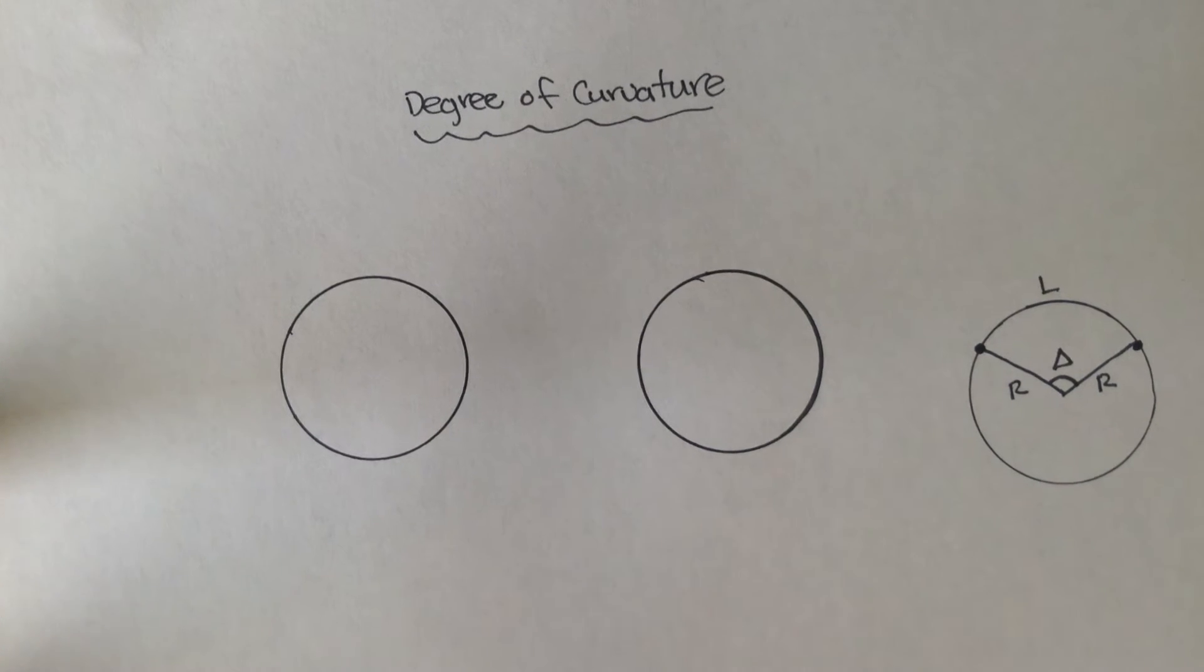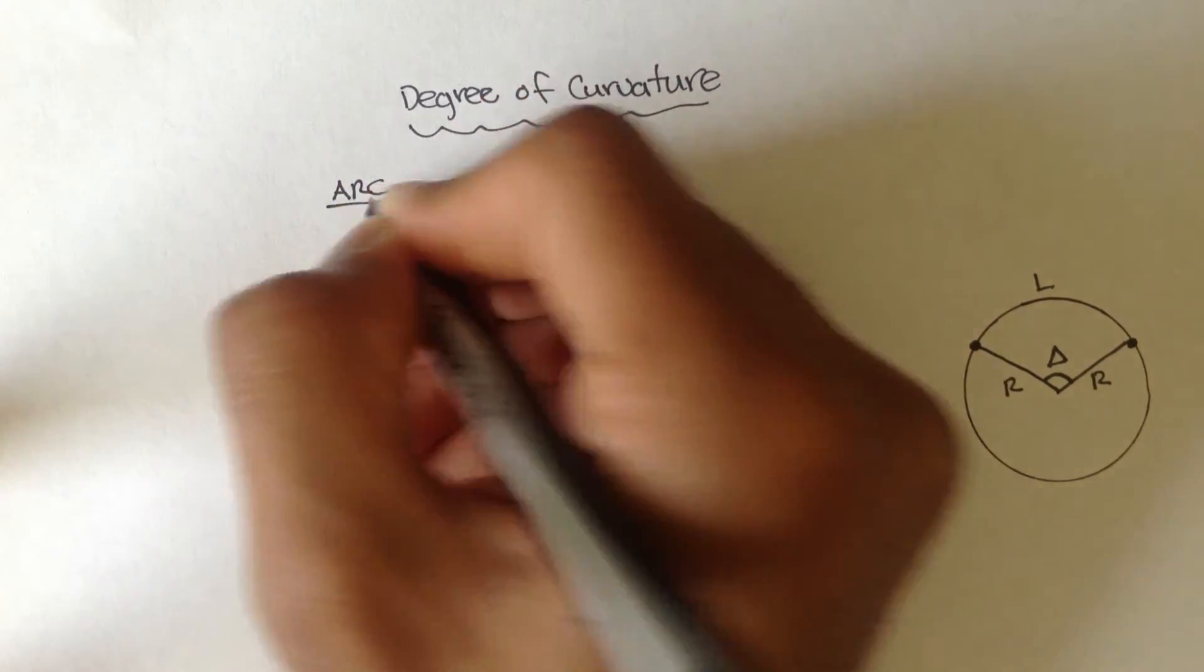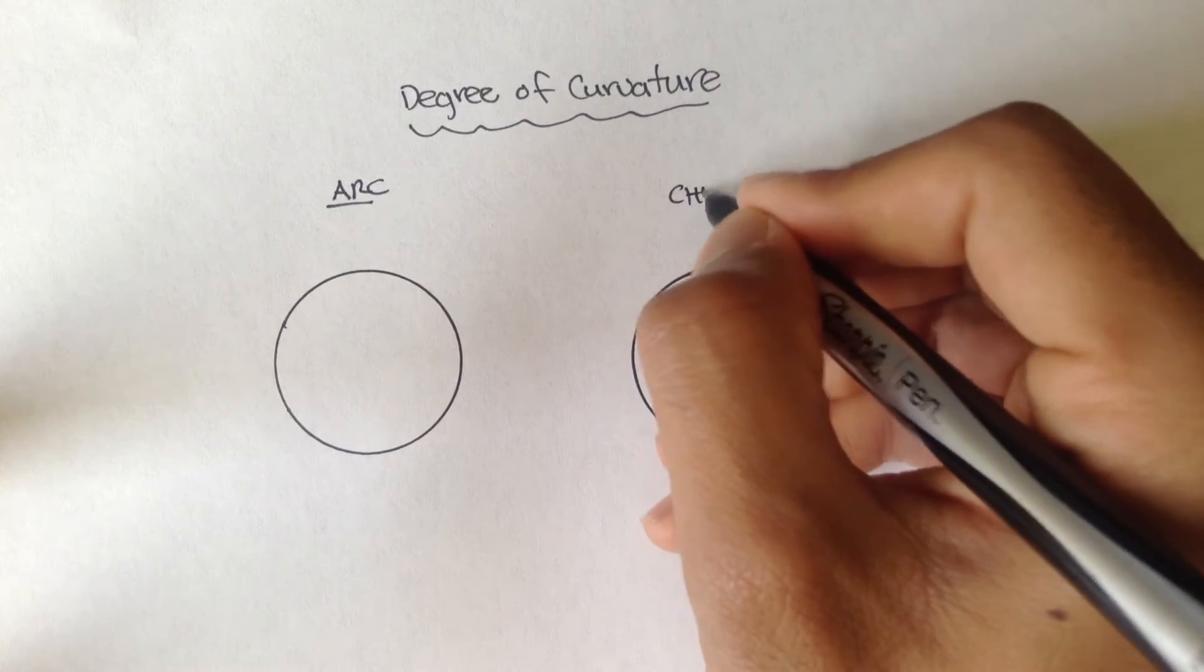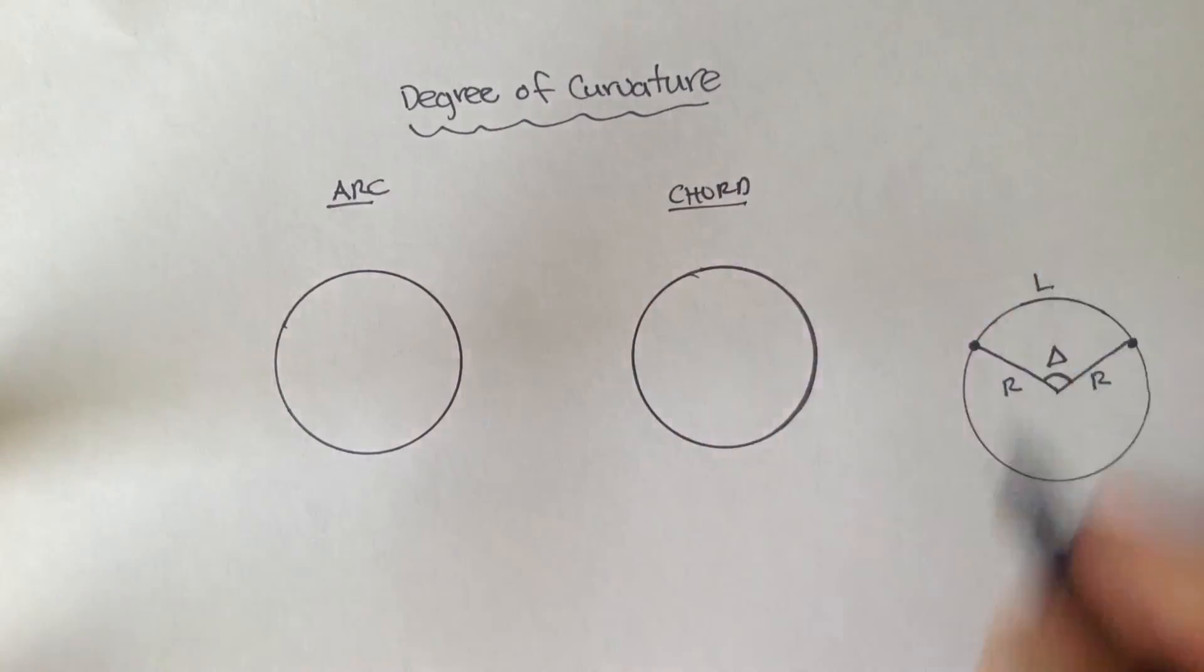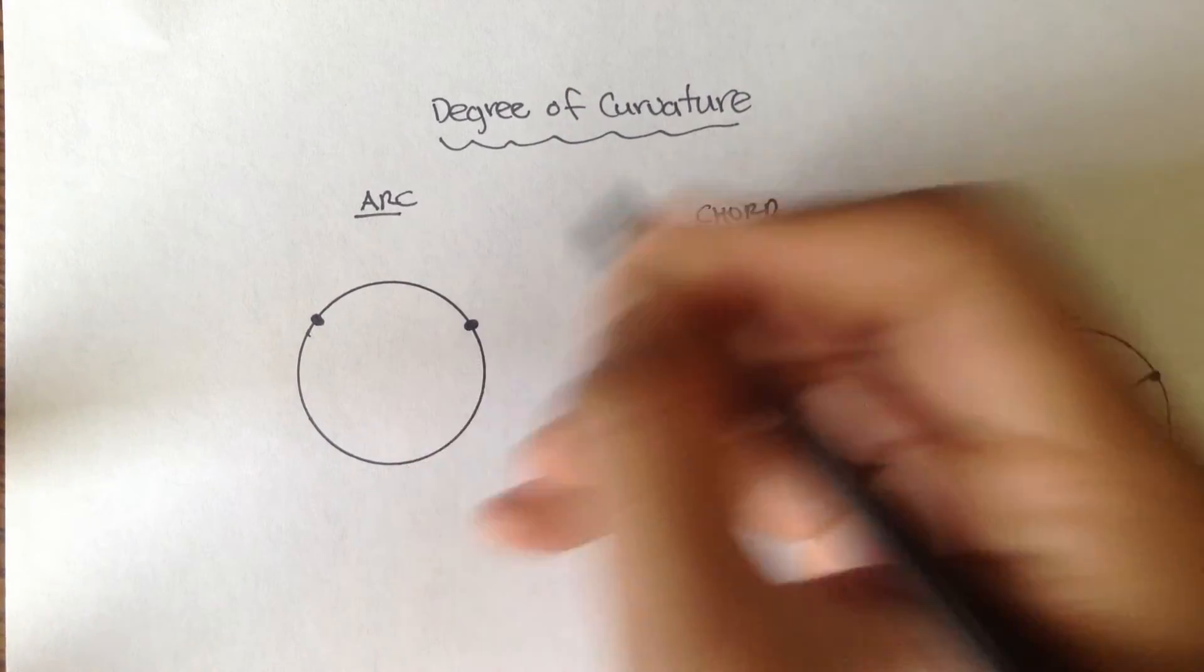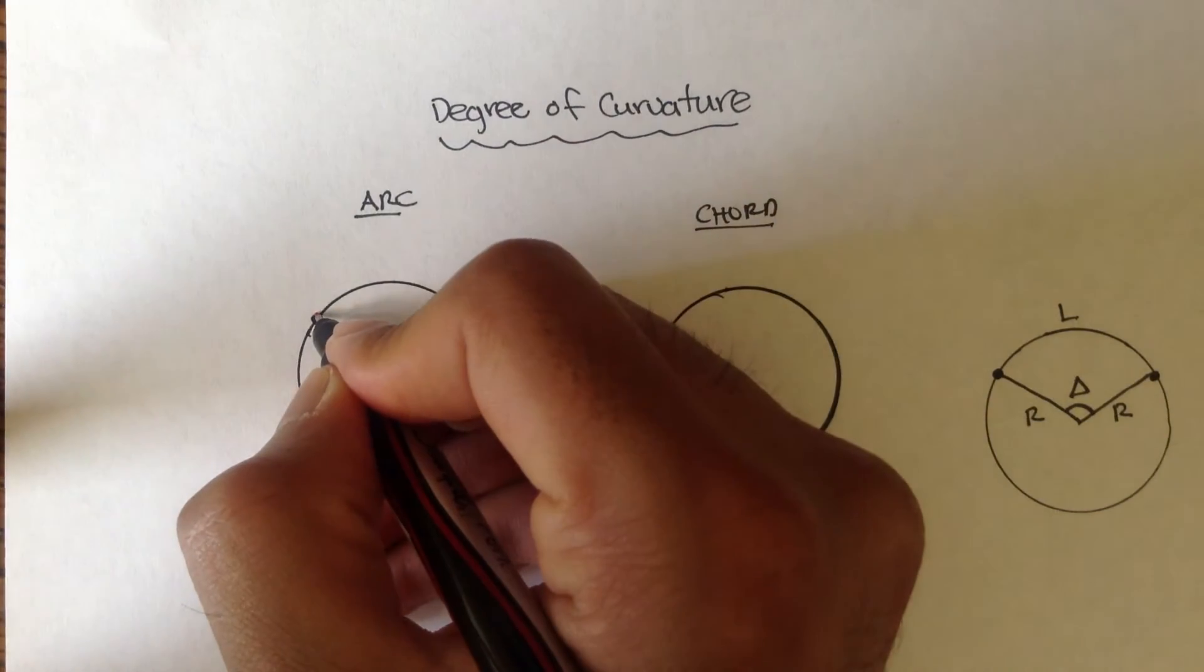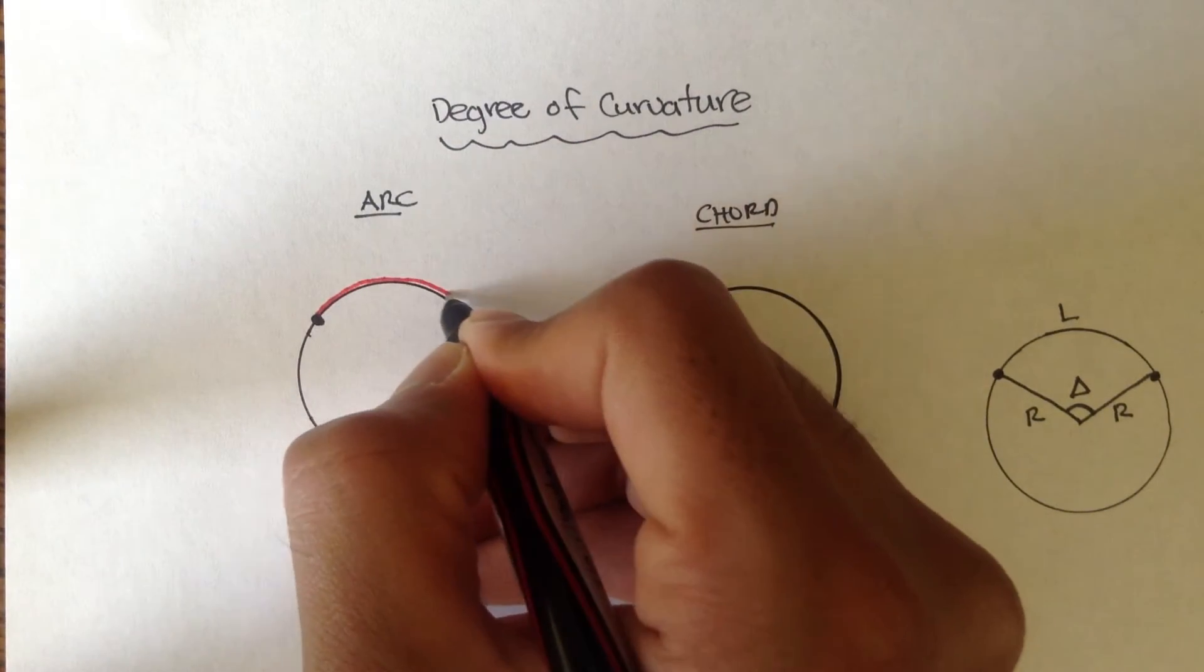And there's two types of degrees of curvatures. There's one for arc, and there's one for chord. And remember, for arc, you start here, you end here, and it's this distance you follow. It's along the curve. It's from here, you go along the curve.